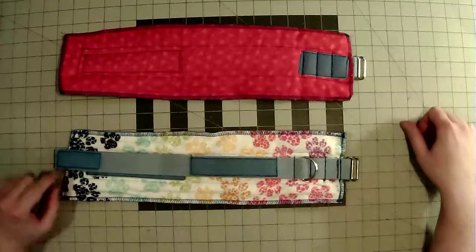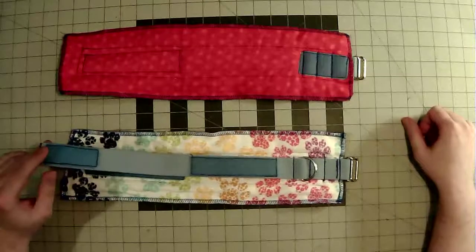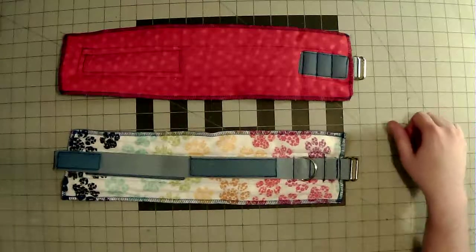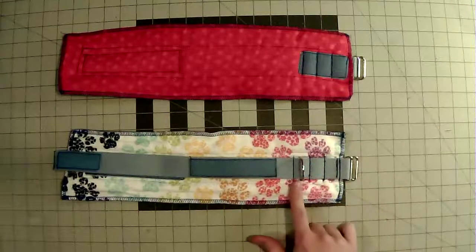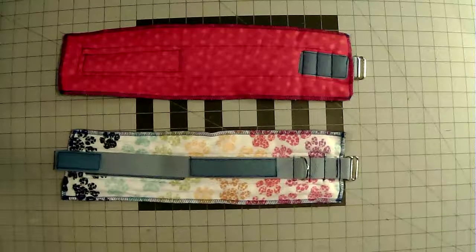They come with hook and loop fasteners to secure it in place, webbing for extra secure hold around the wrist, and a D-ring to attach to any anchor you have.